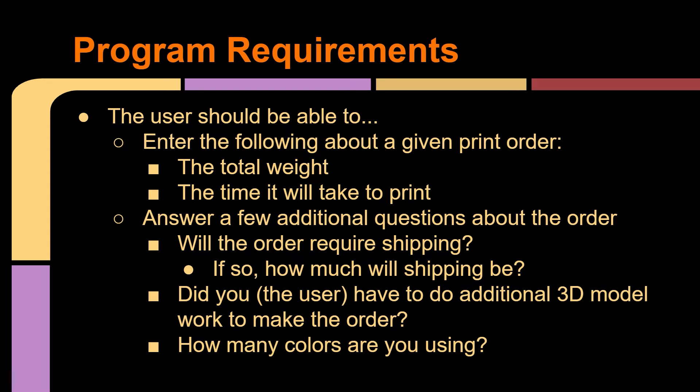The program requirements are that the user should be able to enter the following about a given print order: the total weight in grams and the time it will take to print. They also need to answer a few additional questions: Will the order require shipping? If so, how much will that shipping be? Did you, the user, have to do any additional 3D modeling to make this order work — such as fixing the model or creating something custom for the customer? Lastly, how many different colors are you using? Every time you want to use a different color, you have to stop the machine and swap out the roll.